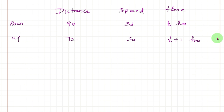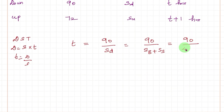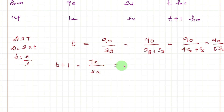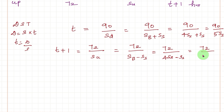Using time equals distance divided by speed: T equals 90 divided by downstream speed, which is (SB plus SS) equals 90 divided by (4SS plus SS) equals 90 divided by 5SS. For upstream: T plus 1 equals 72 divided by upstream speed, which is (SB minus SS) equals 72 divided by (4SS minus SS) equals 72 divided by 3SS. Therefore T equals 72 divided by 3SS minus 1.